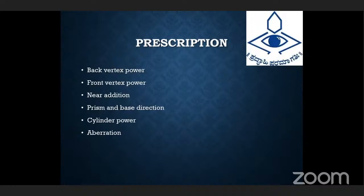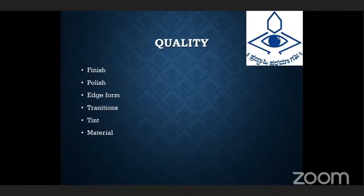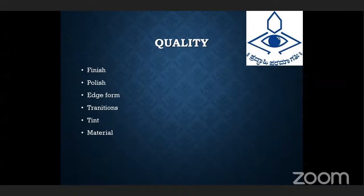The back vertex power is the reciprocal of the distance from the back surface of the lens to the second focal point, while the front vertex power is the reciprocal of the distance from the front surface of the lens to the first focal point. We must verify both back and front vertex powers. Under quality, we have finish, polish, edge form, transition, tint, and material. Tint is incorporated in the lens mainly for handling purposes, while the material of the lens should match the specified parameters.